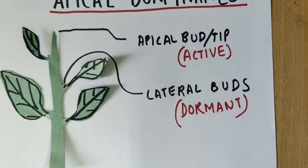As soon as the apical bud is removed from the plant, lateral buds become active. So what is apical dominance? It is a phenomenon in which if we remove the apical bud of a plant, the lateral buds start to grow.